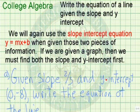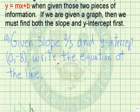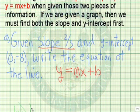Let's begin with the example. Given the slope two-thirds and y-intercept (0, -8), write the equation of the line. Now we begin by writing our familiar equation y equals mx plus b. Since the slope is given to be two-thirds, we replace m with two-thirds.